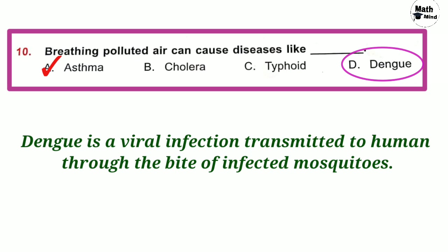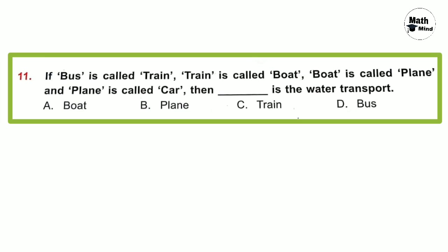Question number 11: If bus is called train, train is called boat, boat is called plane, and plane is called car — then what is the water transport? Water transport is boat, but here boat is called plane. So option B is correct — plane.